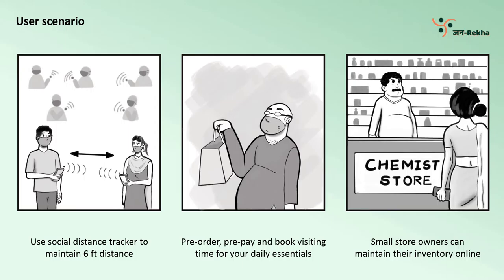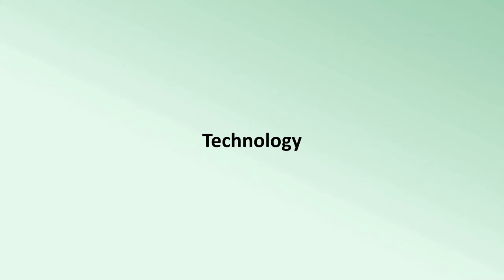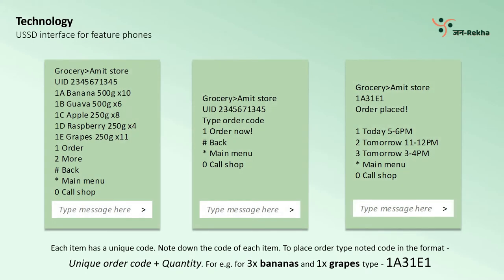We will now talk about the technologies behind the working of this app. For phone users that do not have internet connection, or feature phones, there is an option to connect to the service via USSD. USSD stands for Unstructured Supplementary Service Data. This interface works through codes and has a 180 character limit. Through this interface, a feature phone user can send a code to the server and request for items to buy and pick from available time slots.